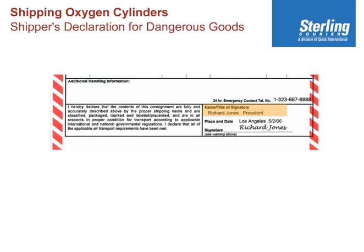The name of the person completing the declaration, that person's title — president, shipping clerk, whatever — the place, which is usually the city (in this case Los Angeles), and the date. The signature must be original in ink; therefore, photocopies or emailed copies will not suffice. You have to have an original signature, and we'd like at least three originals per flight leg.